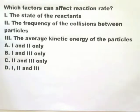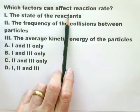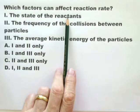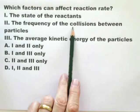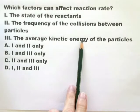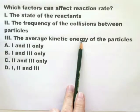In collision theory, you must know what affects reaction rate. You must know it's the state of the reactants — whether they're large particles, small particles, powder, liquid, or gas — and that affects the rate of reaction. The frequency of collisions between particles also affects reaction rate. And the average kinetic energy of the particles: as the average kinetic energy increases, more particles will have a kinetic energy greater than the activation energy. Therefore, all three of these affect the reaction rate.